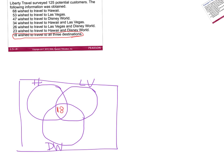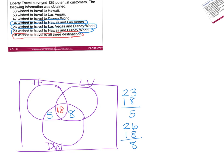Working outward to the double regions: 23 wish to travel to Hawaii and Disney World, but we've already counted 18 of them, leaving 5 in Hawaii and Disney World only. 26 wish to travel to Vegas and Disney World — subtract the 18 already counted — leaving 8 in Vegas and Disney World only. 34 wish to travel to Hawaii and Vegas — subtract 18 — leaving 16 in Hawaii and Vegas only.